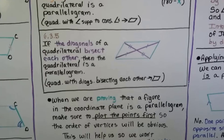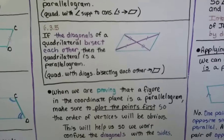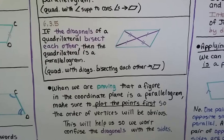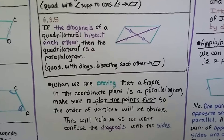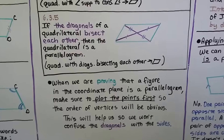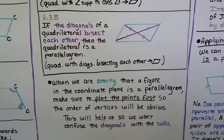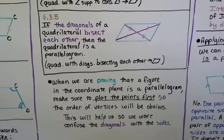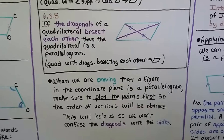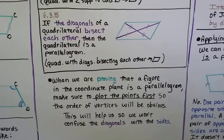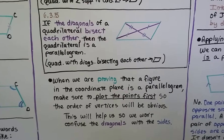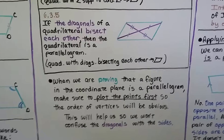When proving that a figure in the coordinate plane is a parallelogram, make sure to plot the points first so the order of the vertices will be obvious. This will help so we won't confuse the diagonals with the sides — so plot the points first.